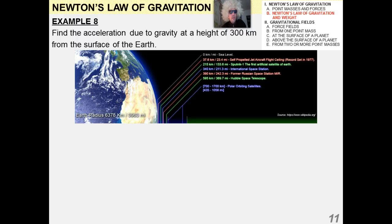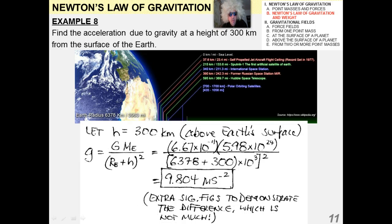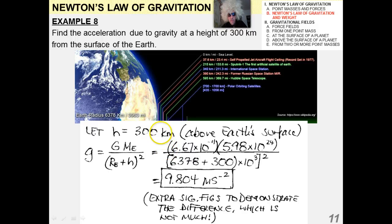For the last example: find the acceleration due to gravity at a height of 300 kilometers from the surface of the Earth. This diagram is to scale — notice that 300 kilometers is not very far above the Earth at all; it's hardly even out of the atmosphere. To solve this, you add the height to the radius in the denominator: it's (Re plus H) squared. The result is 9.804 meters per second squared — not very different from 9.81. Make sure you can work through all these examples; we'll be doing more advanced stuff with gravitation and fields later on.